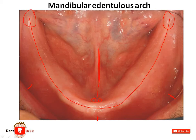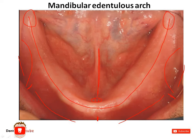Now we can see the buccal shelf area on the buccal aspect. This is the labial sulcus or labial vestibule, and this is the buccal vestibule. The gap between the alveolar ridge and tongue becomes the alveololingual sulcus.